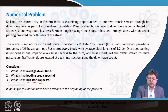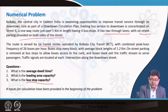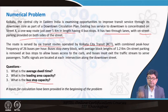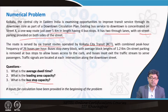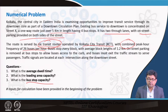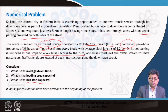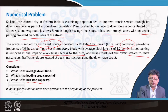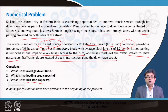It has 2 through lanes with on-street parking provided on both sides of the street. The route is served by 6 different transit routes along this 5-kilometer stretch, operated by a fictitious agency called Kolkata City Transit, with combined peak hour frequency of 26 buses per hour — that is the combined frequency of all 6 routes. Buses stop every block with an average block length of 1.2 kilometers. On-street parking is removed at bus stops to allow buses to access the curb, and buses must exit the traffic stream to serve passengers. Traffic signals are located at each intersection along the downtown street.